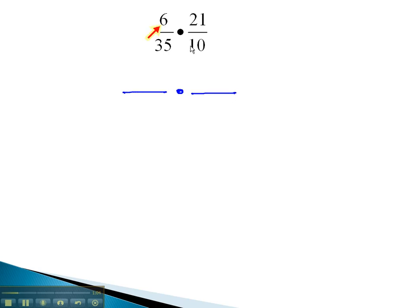6 and 10 are both divisible by 2, because 6 is 2 times 3, and 10 is 2 times 5. Similarly, 35 and 21 have a common factor we can reduce out of 7. This is because 35 is 7 times 5, and 21 is 7 times 3.